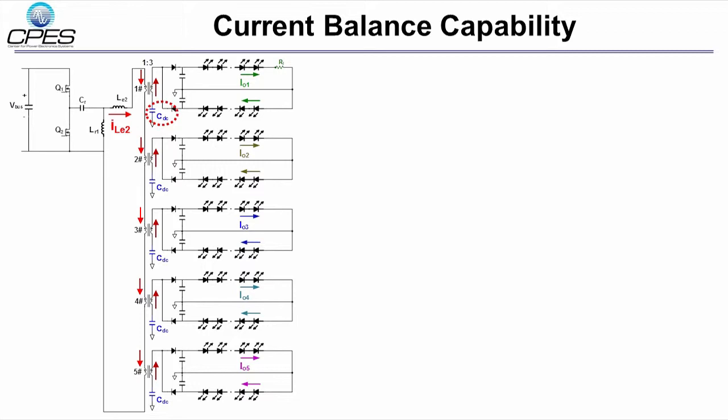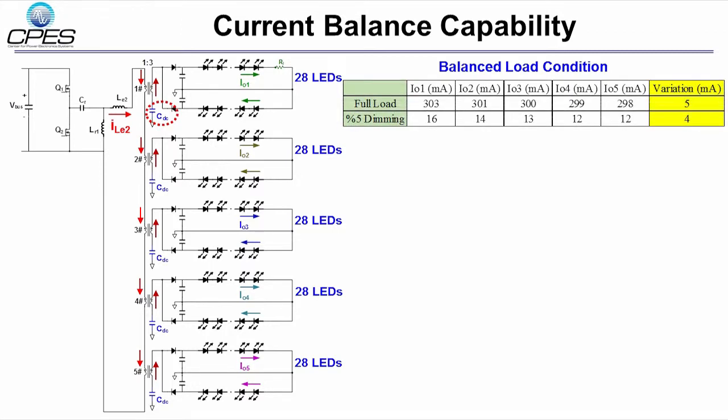Let me show you two examples. One is under the balanced load condition. There are 10 LED strings and each string has 28 LEDs. From 5% dimming to full load condition, the current variation among these LED strings is about 4 to 5 mA.